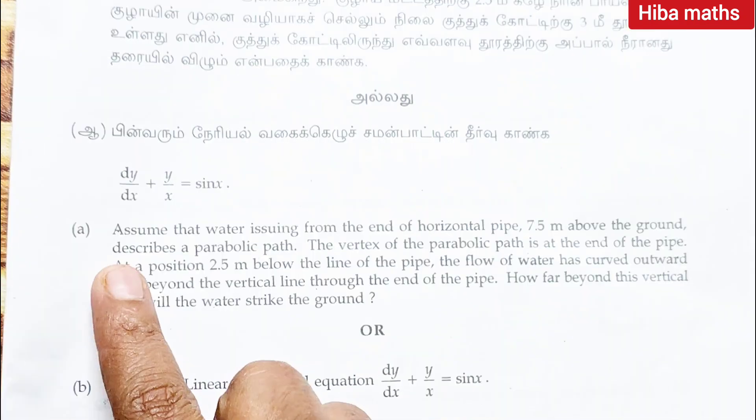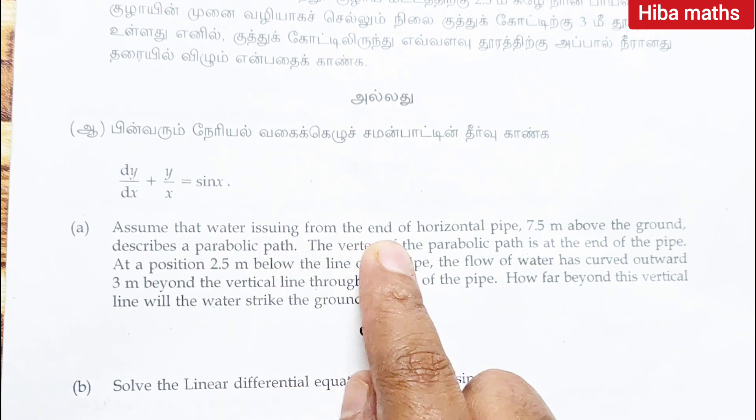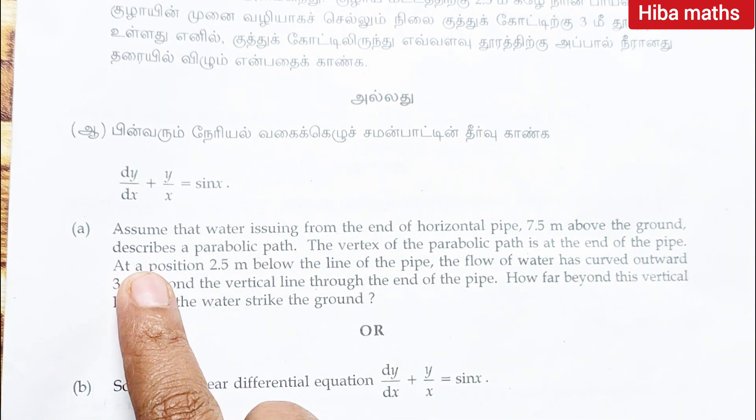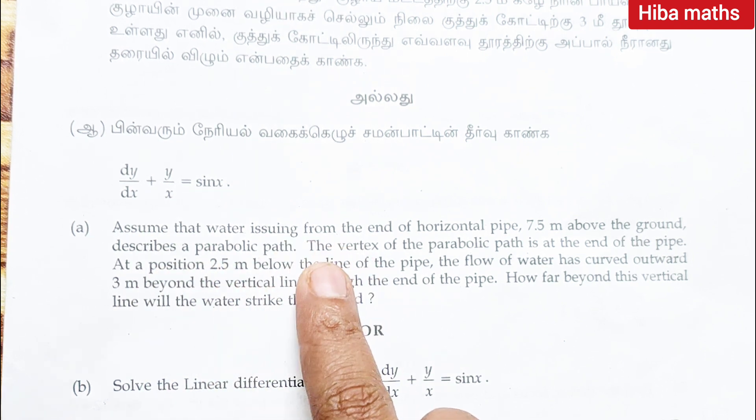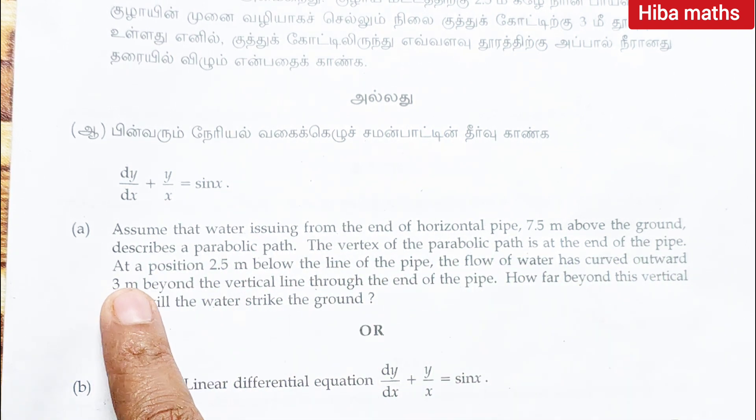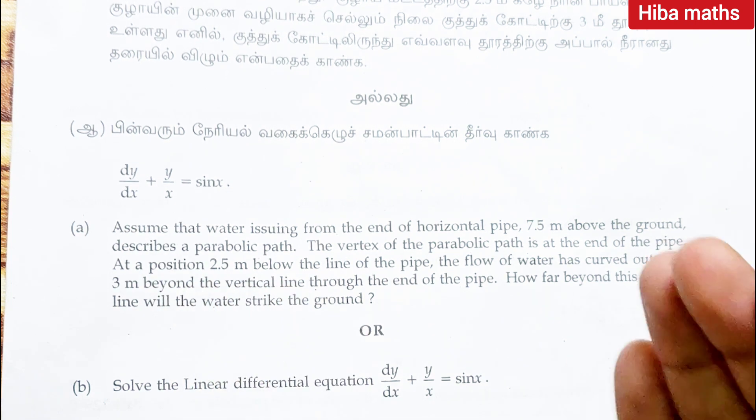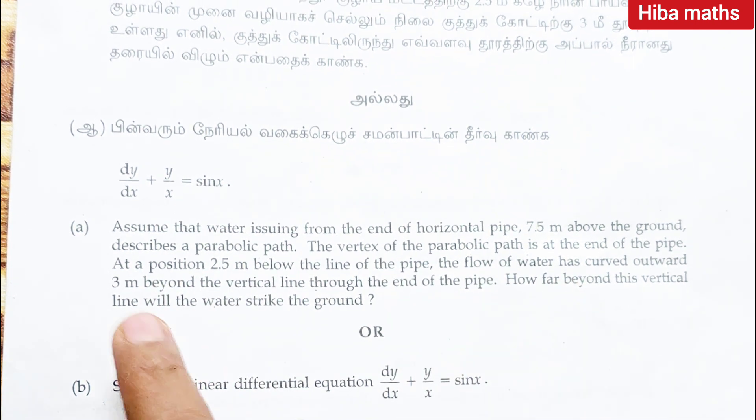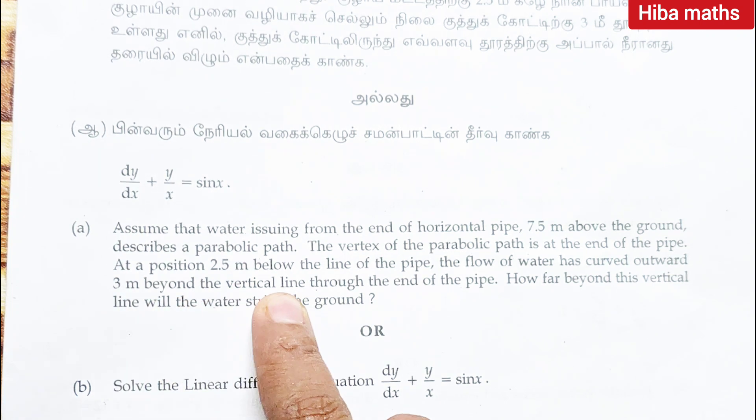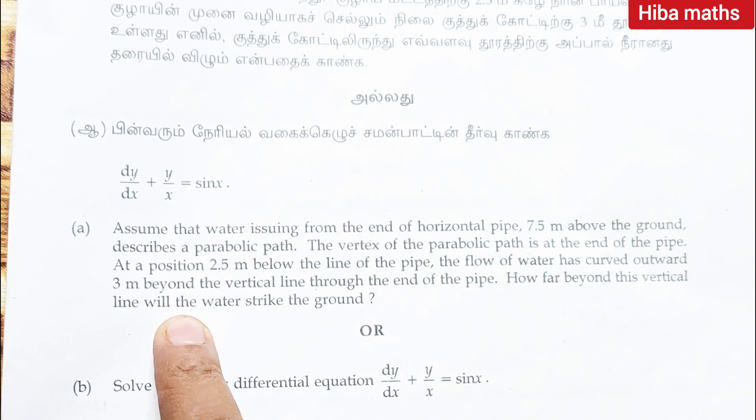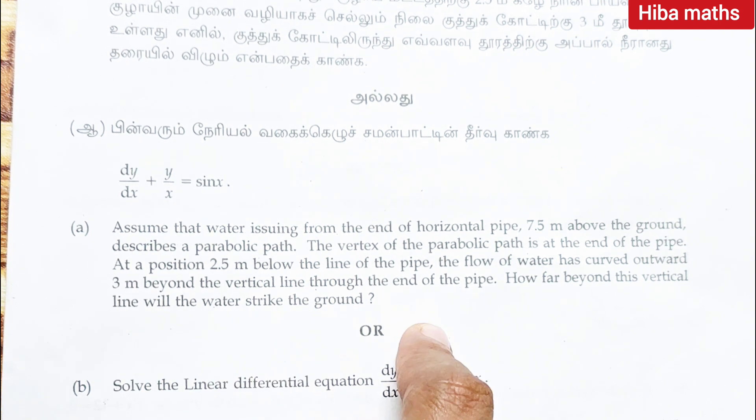Question 45: assume that water issuing from the end of horizontal pipe 7.5 meter above the ground describes a parabolic path. The vertex of the parabolic path is at the end of the pipe at a position 2.5 meter below the line of the pipe. The flow of water has curved outward 3 meter beyond the vertical line through the end of the pipe. How far beyond this vertical line will the water strike the ground?